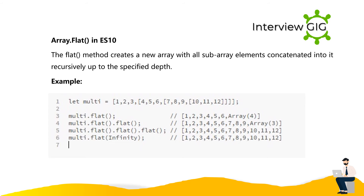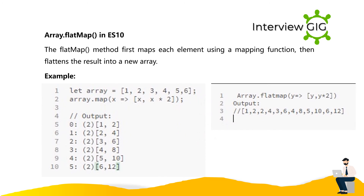multi.flat(3) returns the fully flattened array [1, 2, 3, 4, 5, 6, 7, 8, 9, 10, 11, 12]. Array.flatMap in ES10: The flatMap method first maps each element using a mapping function, then flattens the result into a new array. Example: let a = [1, 2, 3, 4, 5, 6]; a.map(x => [x, x*2]) produces nested arrays, while a.flatMap(y => [y, y*2]) outputs [1, 2, 2, 4, 3, 6, 4, 8, 5, 10, 6, 12].